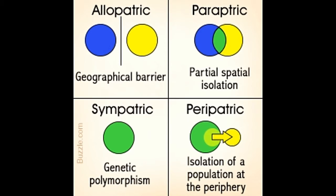"Multiply, vary, let the strongest live and the weakest die." — Charles Darwin. The term species refers to a group of individuals that can interbreed to produce viable offspring. Speciation refers to the evolutionary process of formation of a new species from the existing ones.